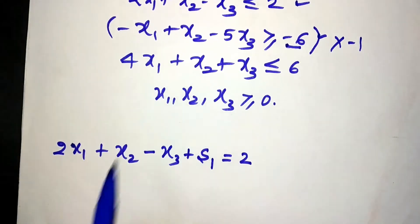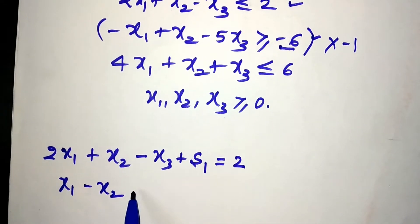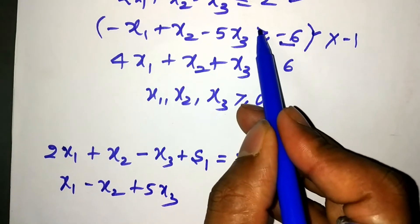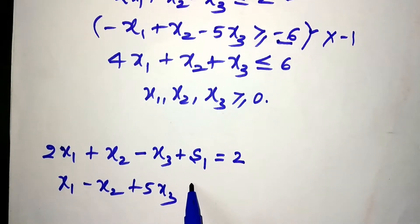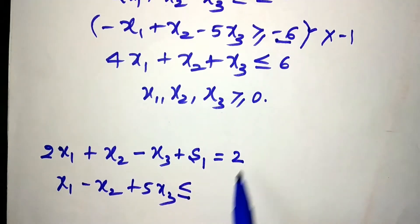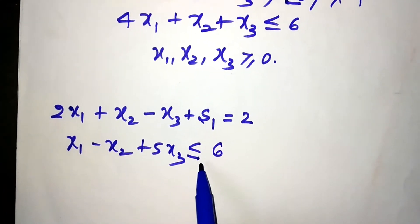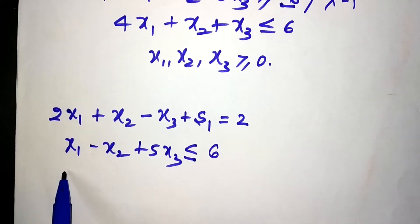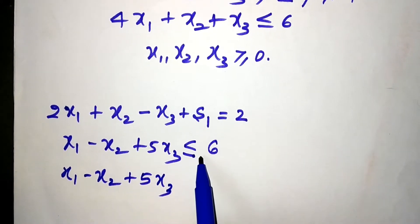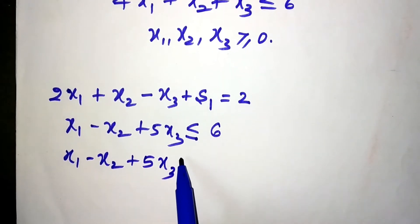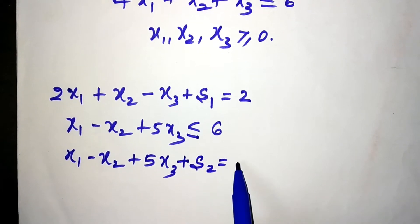When I multiply by minus one, minus x1 becomes plus x1, plus x2 becomes minus x2 — all the signs convert. The greater than or equal to inequality converts to less than or equal to, and minus six becomes plus six. So we add slack variable s2 to get: x1 minus x2 plus x3 plus s2 equals 6.